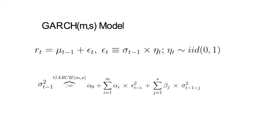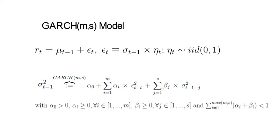Now there are some parameter restrictions. First, alpha 0 needs to be positive. All of the alphas need to be 0 or positive. All of the betas need to be 0 or positive. And there is this restriction that the sum of alpha i plus beta j, sum going from i equals 1 to the max of m or s, needs to be smaller than 1.